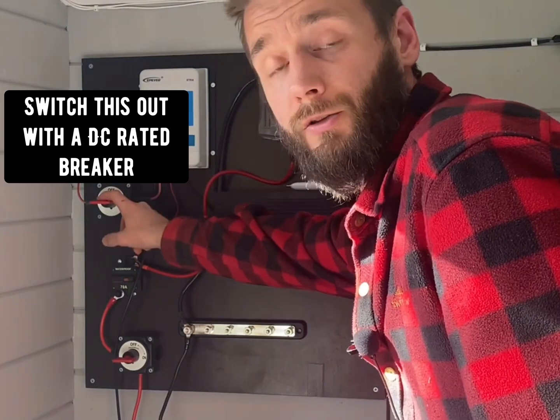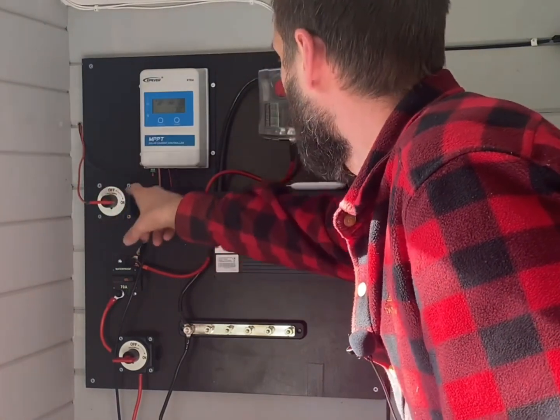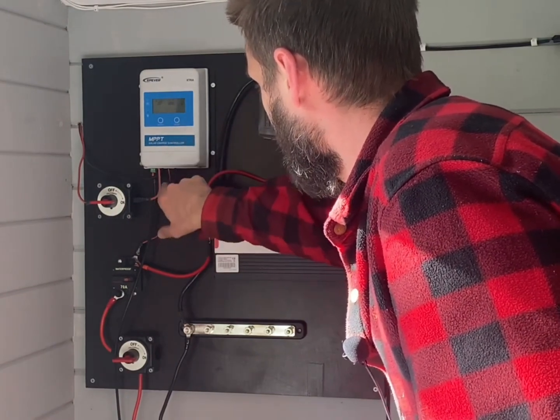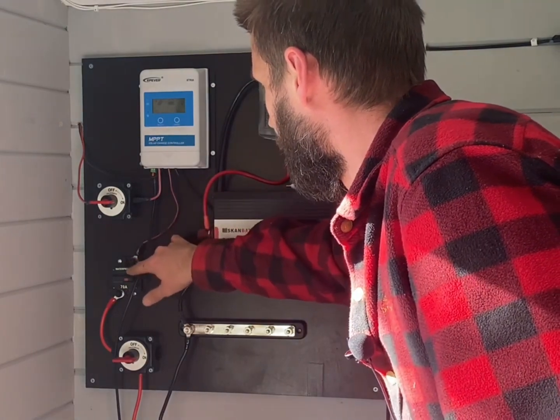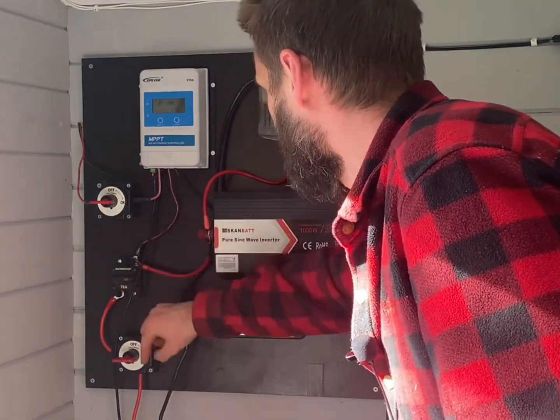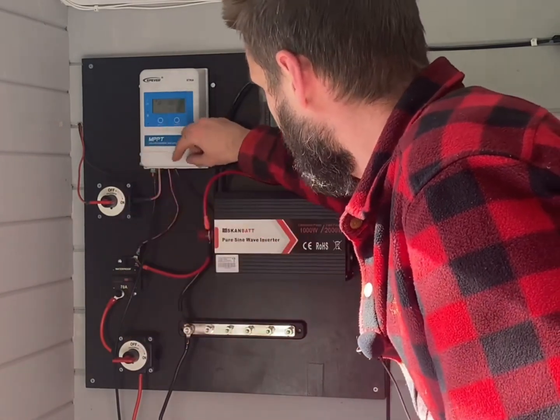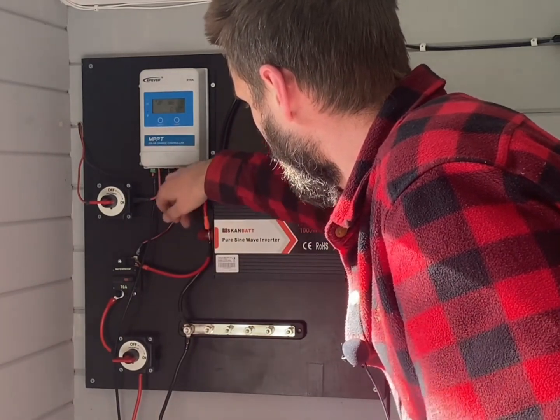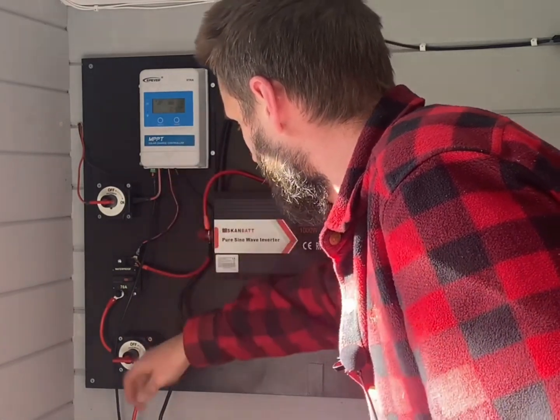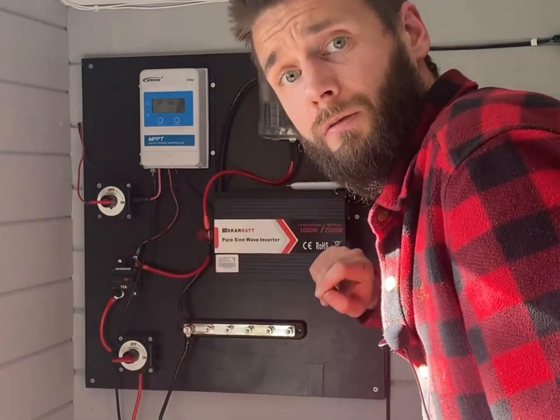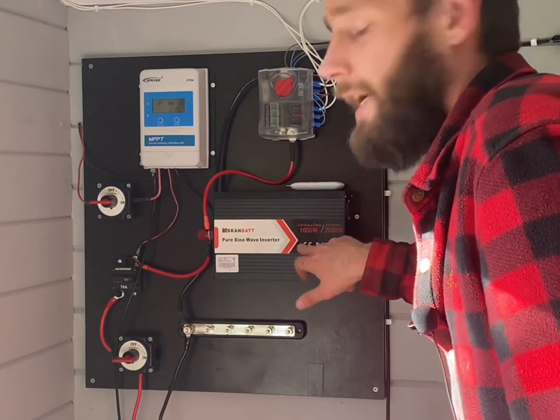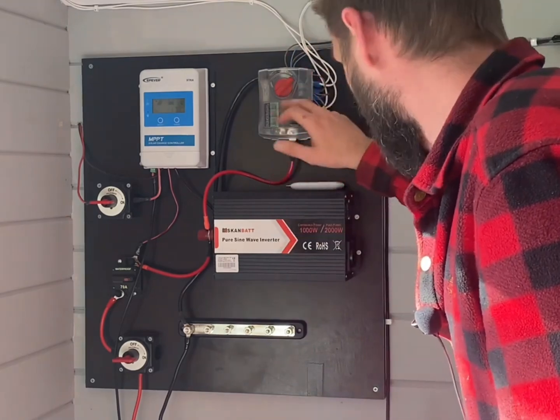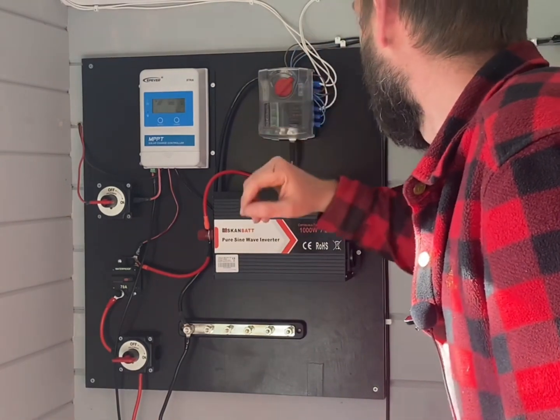The solar panels' power goes into the charge controller, through the charge controller down the positive side through the breaker, through the switch, and into the batteries. The same for the negative, which goes through the negative line, through the inverter, through the bus bar, and down to the battery. That's pretty simple. This is a 1000 watt pure sine wave inverter, and I just got some lights and a small water pump.